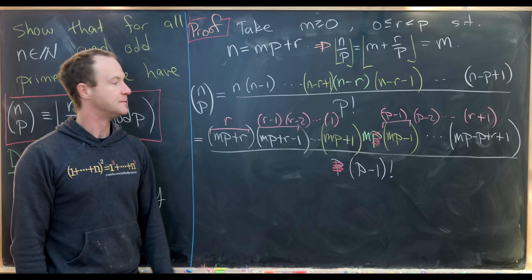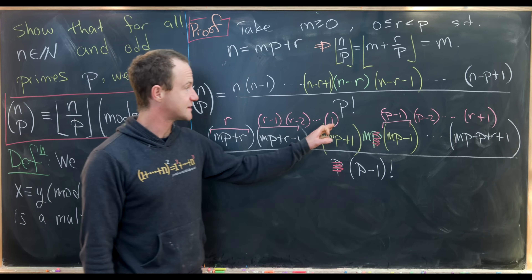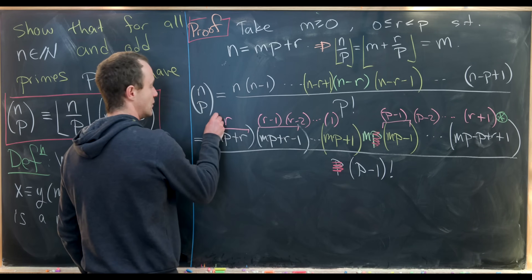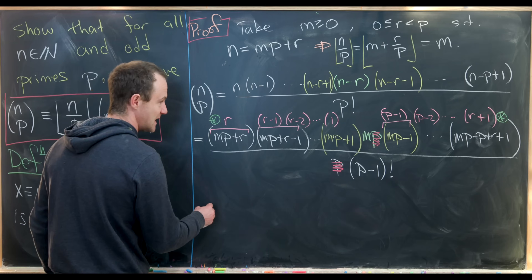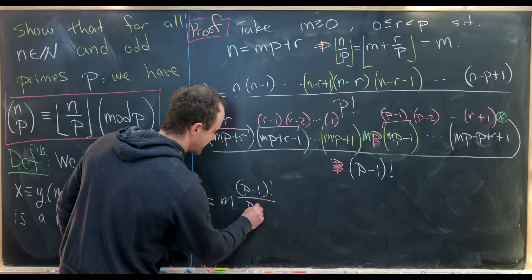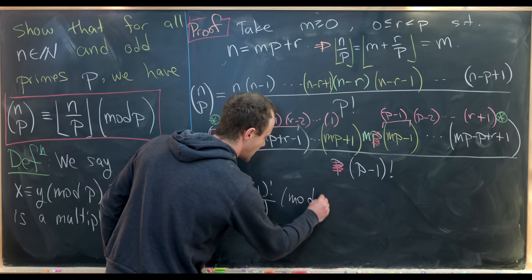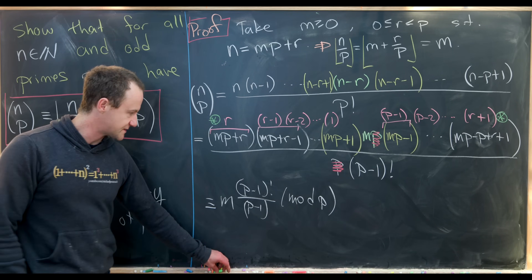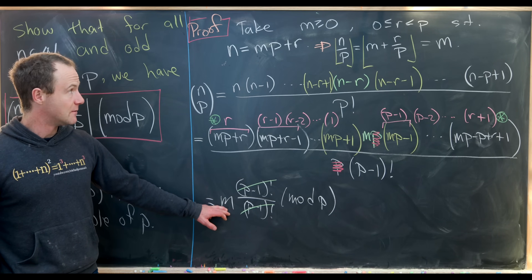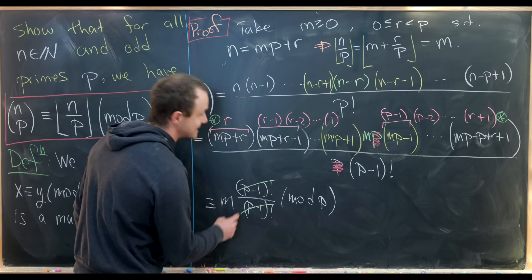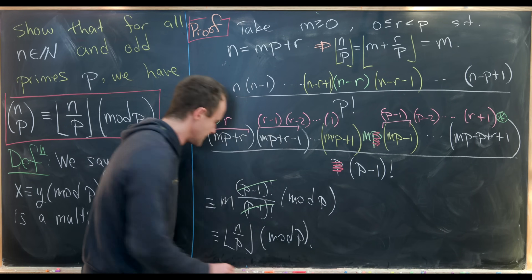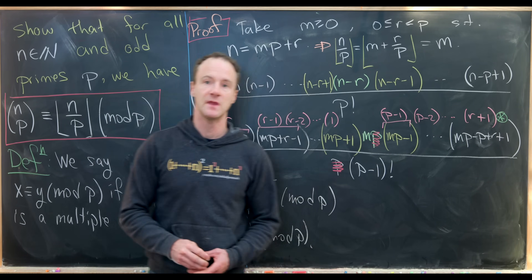We now have two descending products: r, r minus 1, down to 1, and p minus 1, p minus 2, down to r plus 1. Gluing these together gives exactly (p minus 1) factorial. So we're left with m times (p minus 1) factorial over (p minus 1) factorial, which is congruent to m mod p. Since m equals the floor of n over p, this completes our proof of the identity.